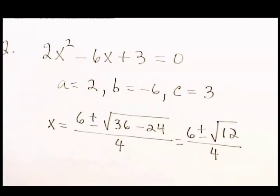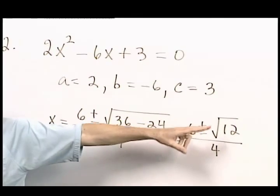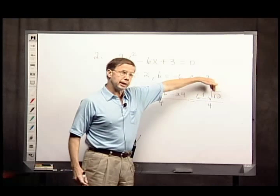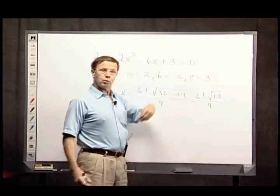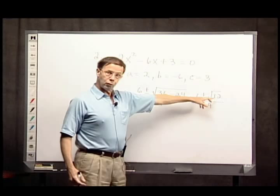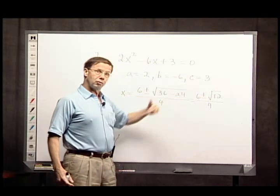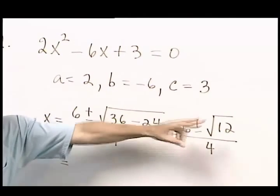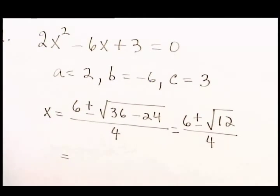Now, you have to remember some of what the steps are in simplifying radicals. If there are any square factors in here, we can take the square roots of them. 12 is 4 times 3, and the square root of 4 is 2. So I can replace this with 2 times the square root of 3.